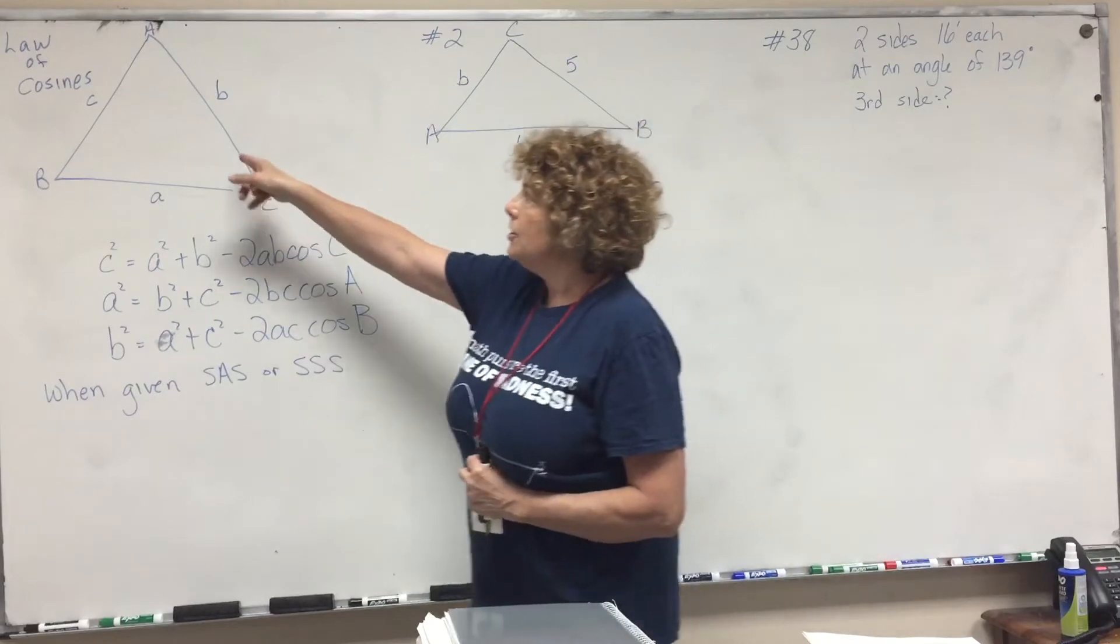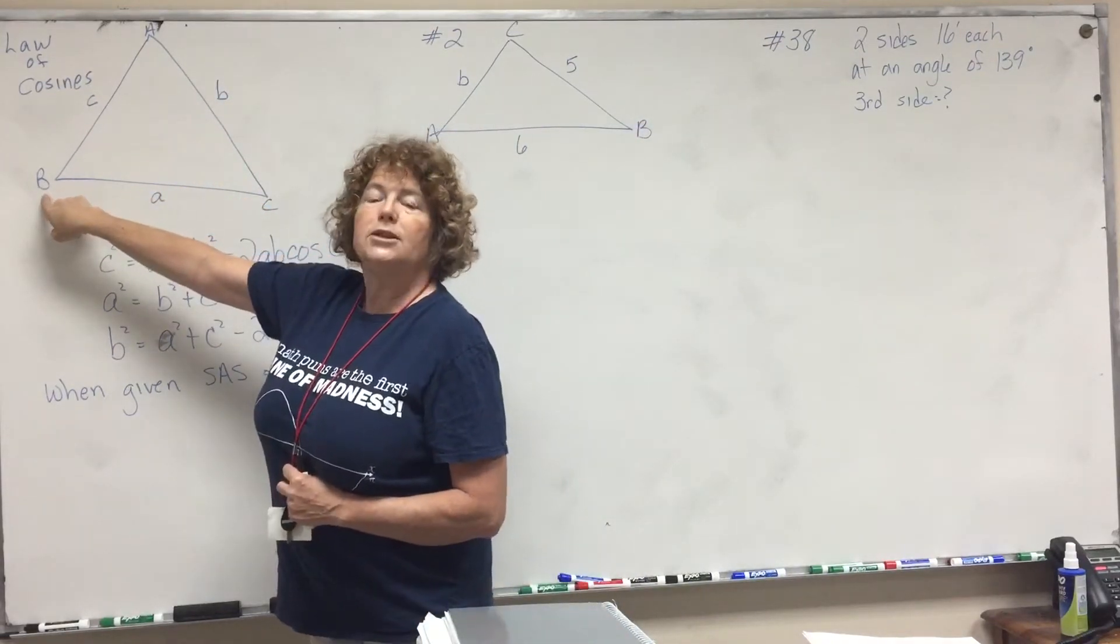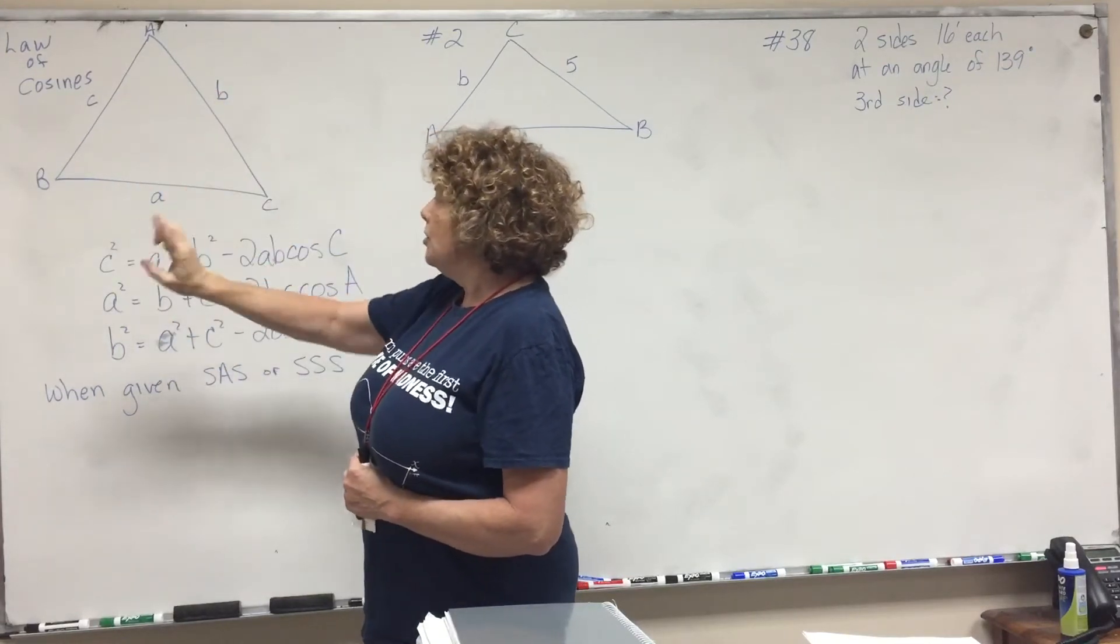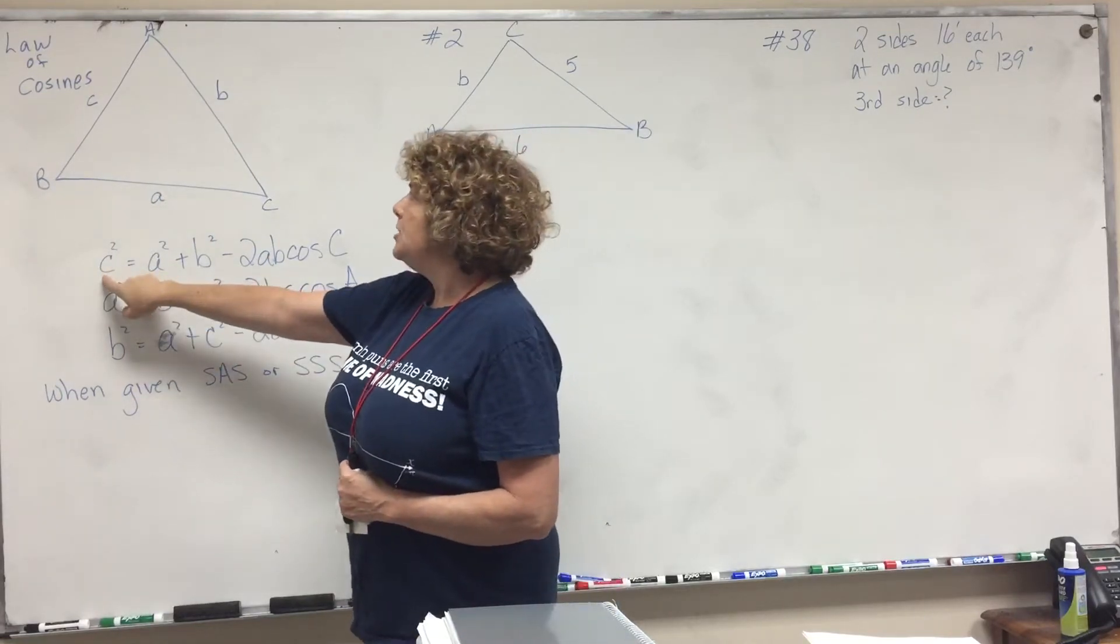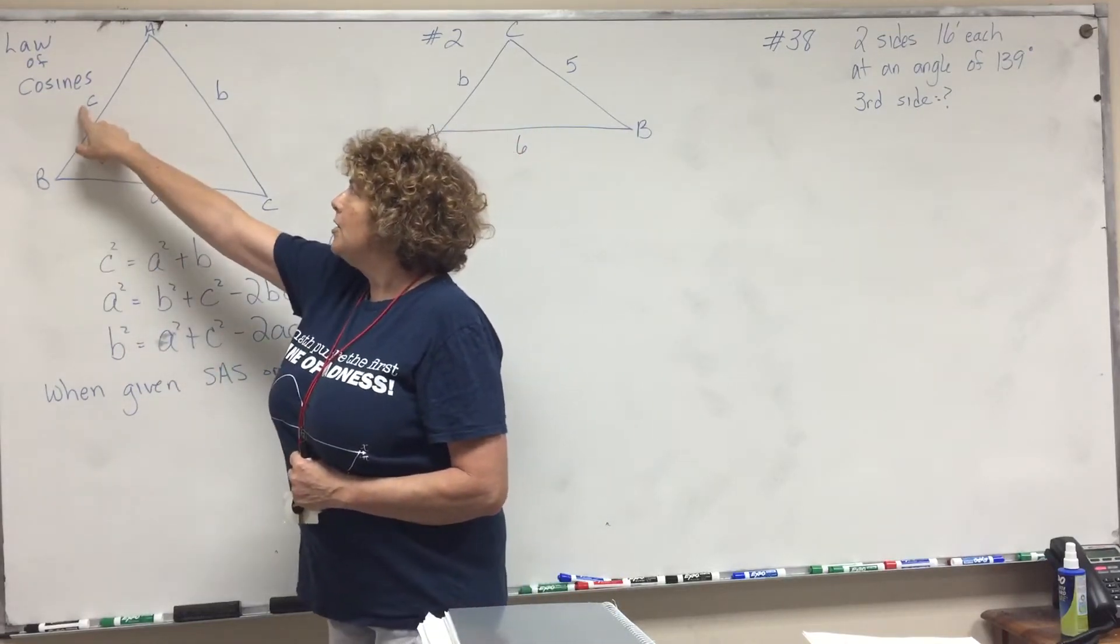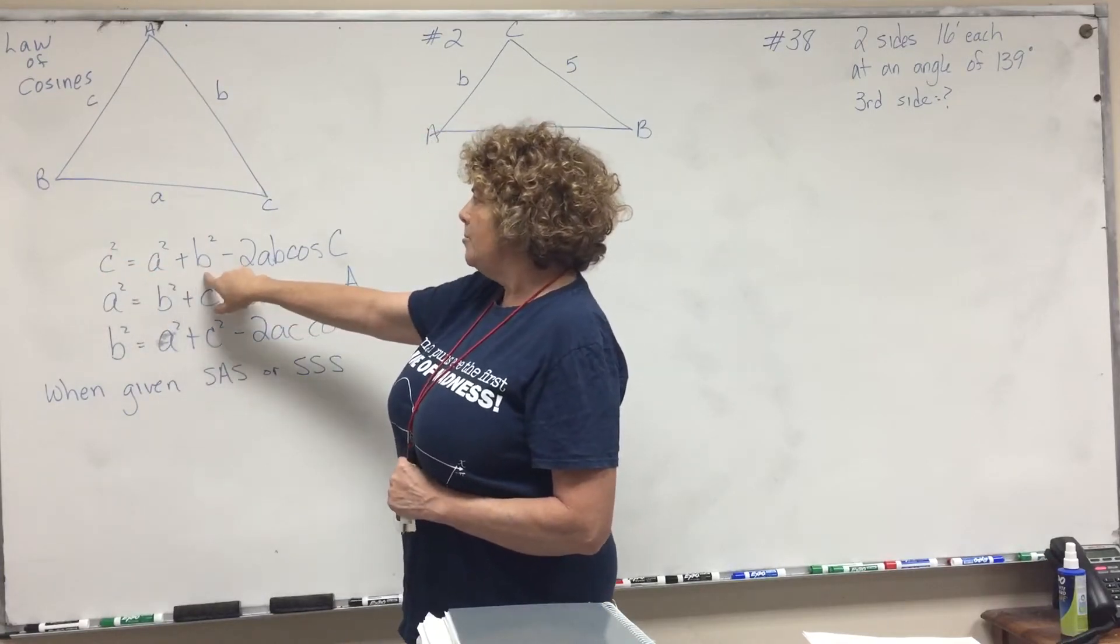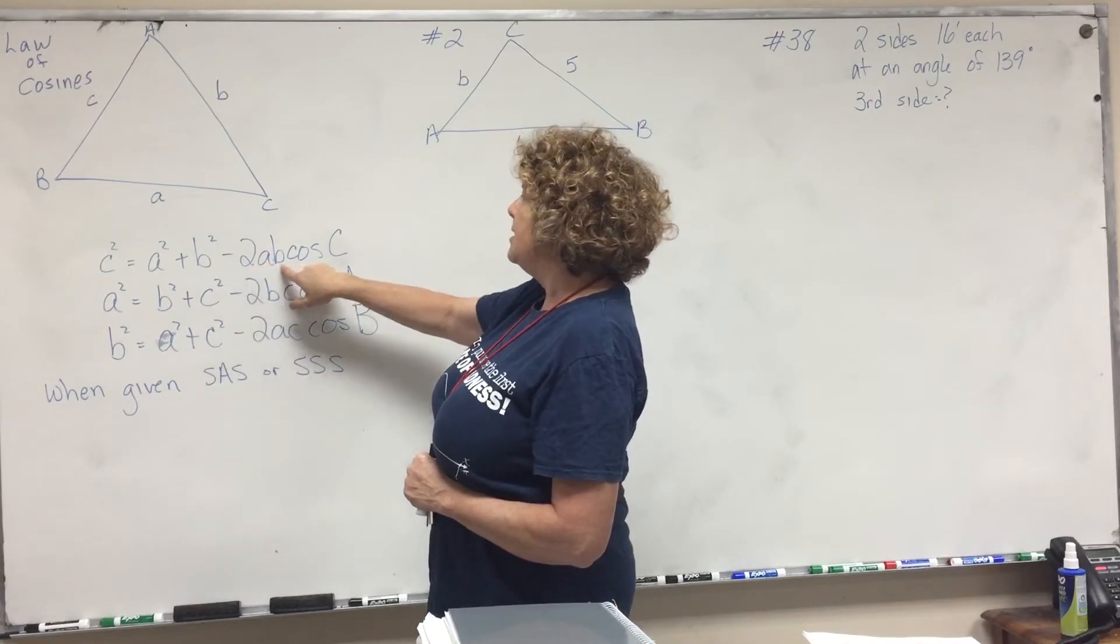So let's take a look first at the law of cosines. Capital B is always the angle, little b is always the side across, and that's how it works. So the law of cosines is in your book, but you can keep it in a notebook. c squared, in other words the side across from C, equals the side a squared plus the side b squared, minus two times the side a b times the cosine of c.